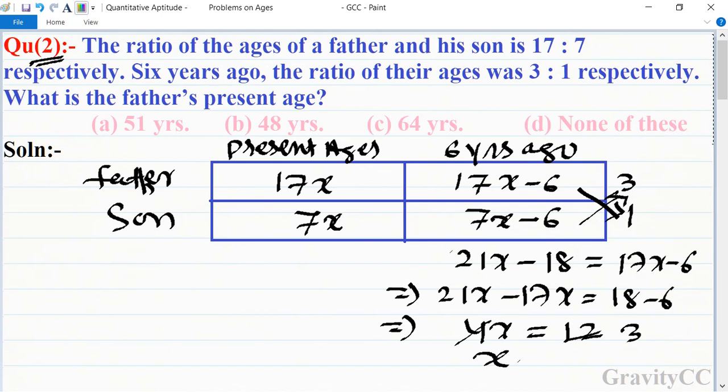17 times 3 is 51, so option A is the correct answer.